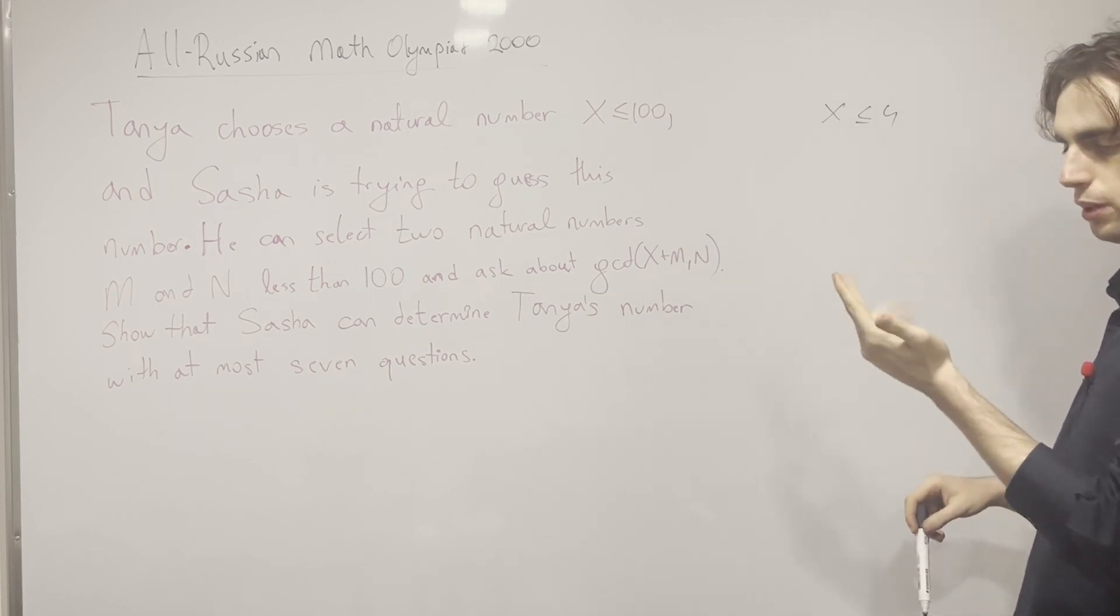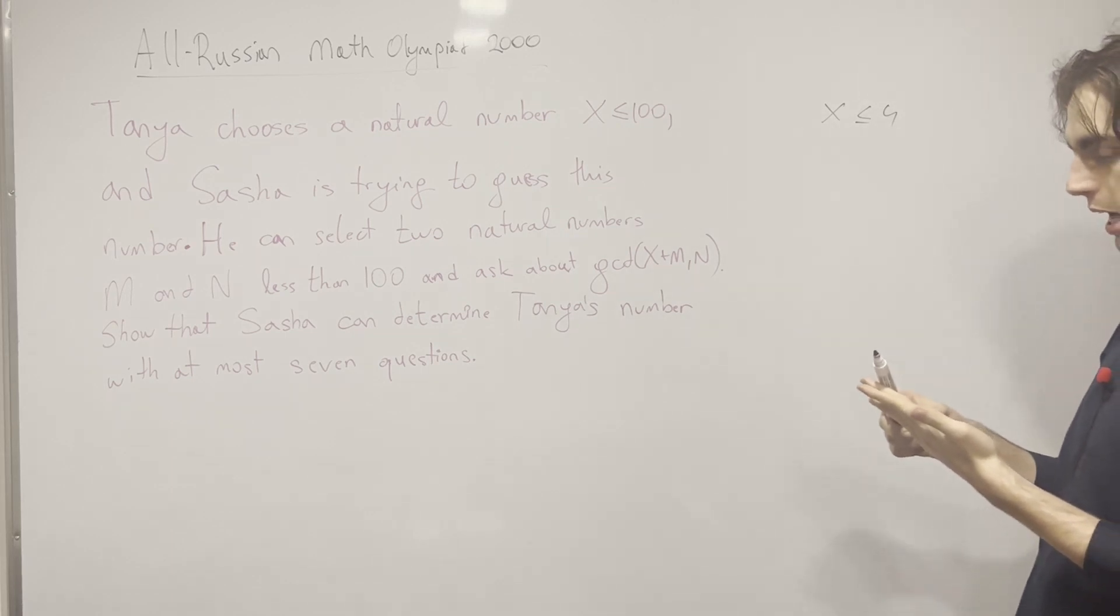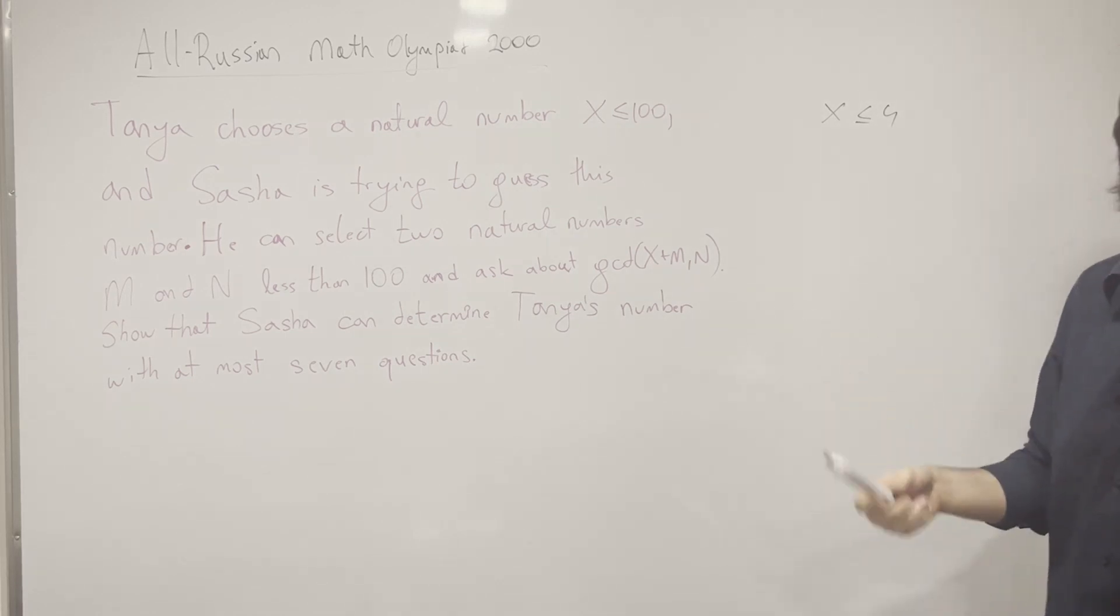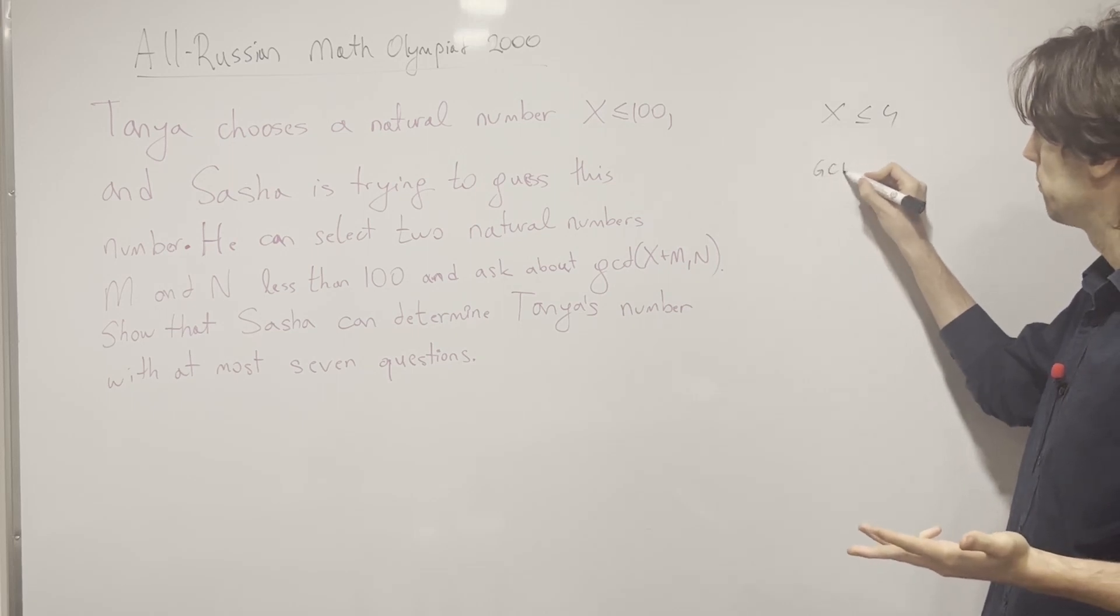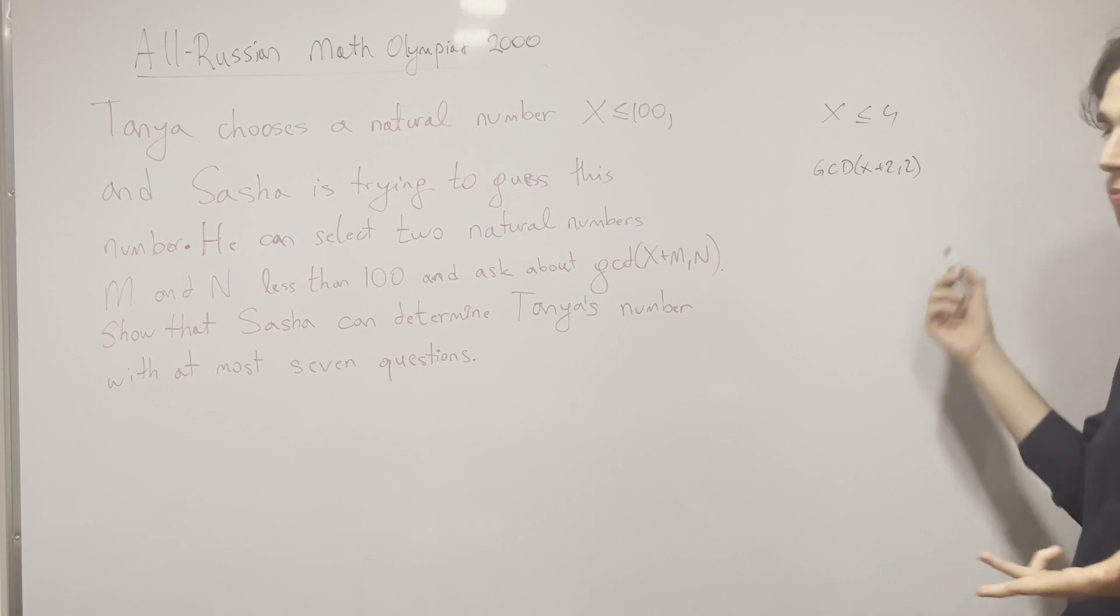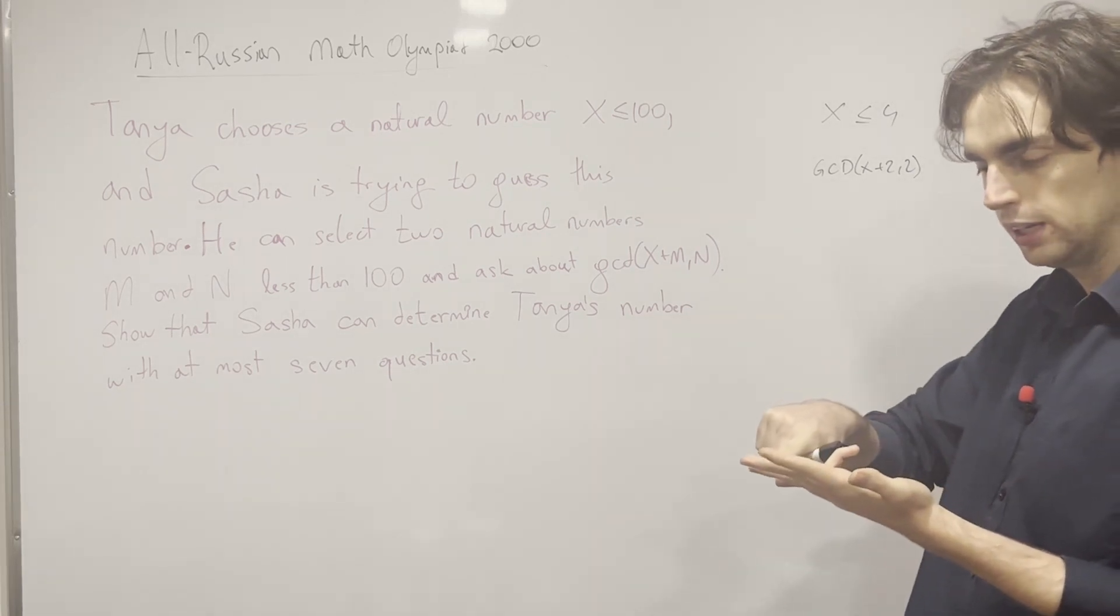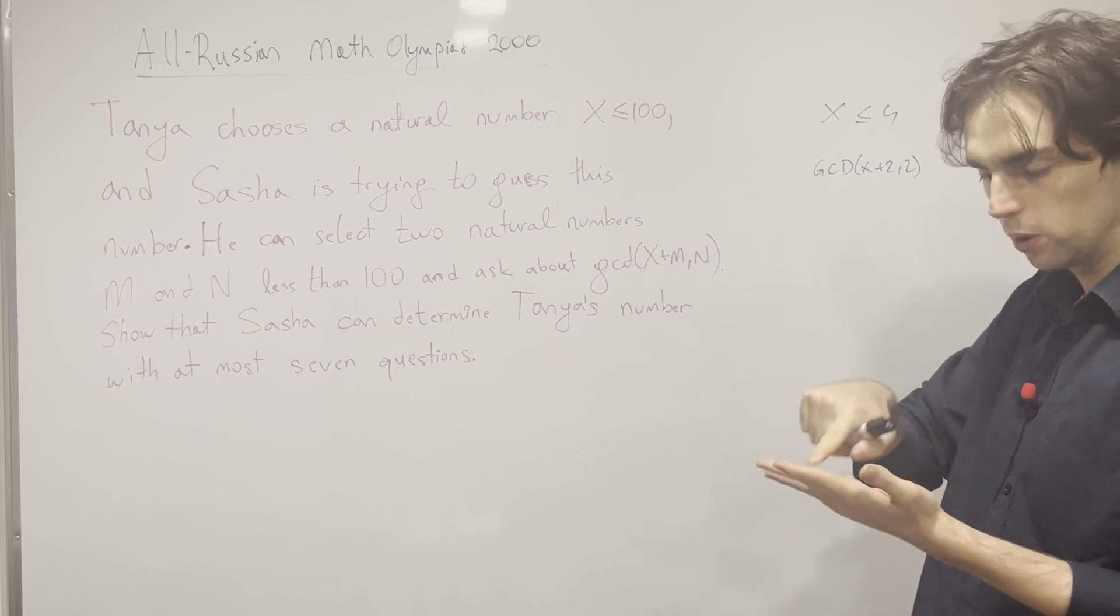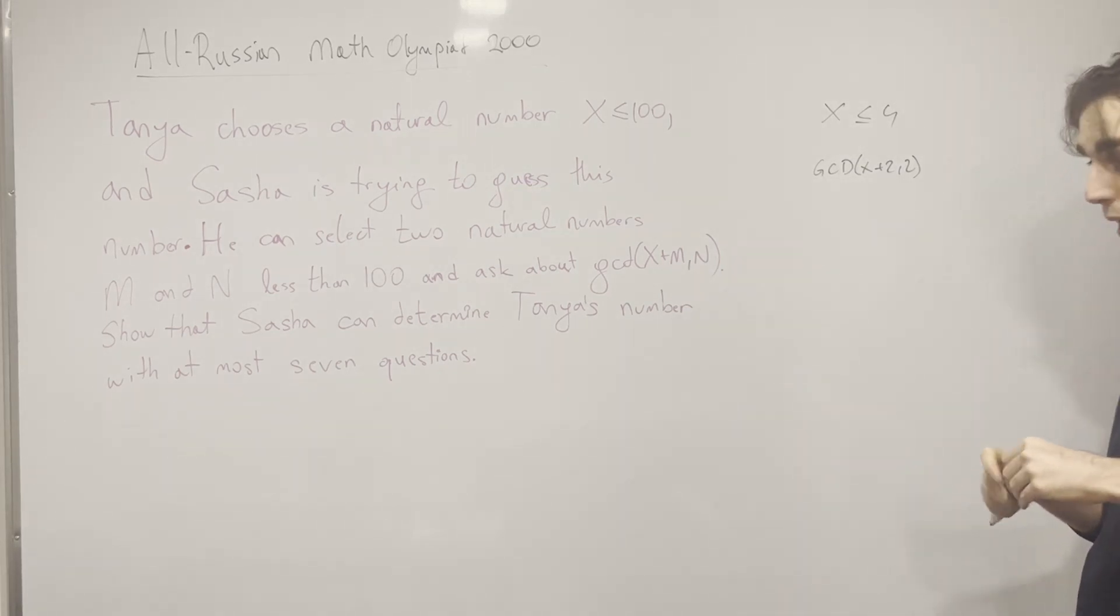Well I have numbers one, two, three and four. I can divide it by two - I can figure out the parity of the number. I can ask about the GCD of X plus 2 and 2, and if this is even it's either two or four, if it's odd it's either one or three. So that gives me the parity of the number.